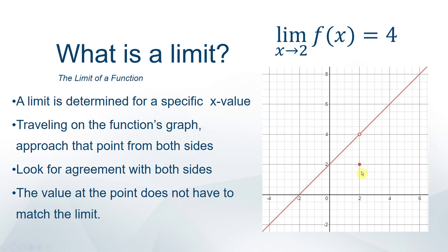You can also have the function defined, but at some other value — there's a hole and then a point directly above or below it. So f of 2 might actually equal 2, but that doesn't matter because if you're traveling along the line you'd be headed towards 4. The limit still equals 4. All three graph cases look very similar, so be careful with technology since you may not be able to see those holes or displaced points.